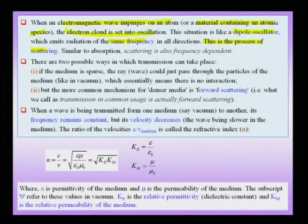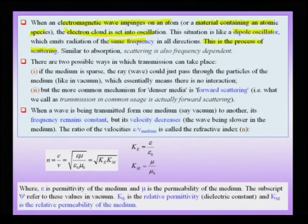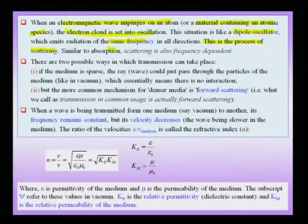In other words, it is the electron cloud of an atom in combination with the ion cores which is responsible. We initially consider the ion cores as fixed and the electrons as the ones oscillating. This dipole oscillator sends out radiation in all directions — this is the process of scattering. Scattering is not merely reflection; it is actually a dipole oscillator at work, and similar to absorption, scattering is also frequency dependent.